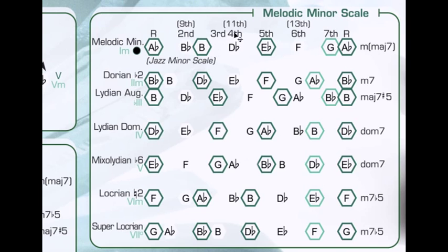We've got the third, fourth, fifth, sixth, and seventh. If you keep going out you end up with a note that would be the ninth, then the eleventh, and the thirteenth of the scale — it's actually taking you into the second scale, but those happen to be the same notes. The ninth is the same as the second degree, the eleventh is the same as the fourth degree, and the thirteenth is the same as the sixth degree.